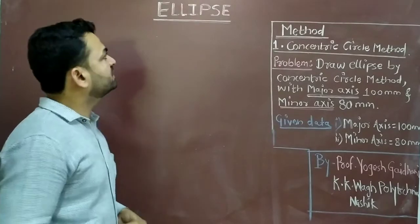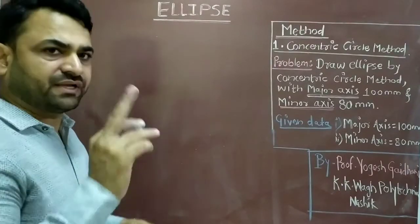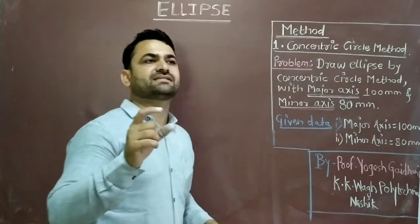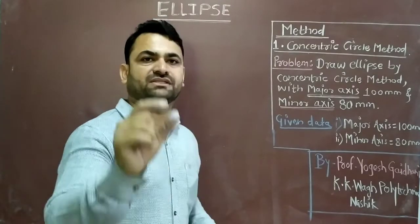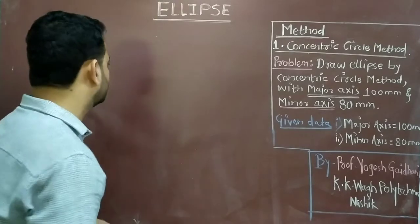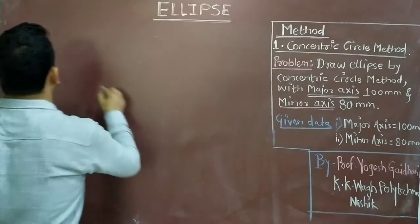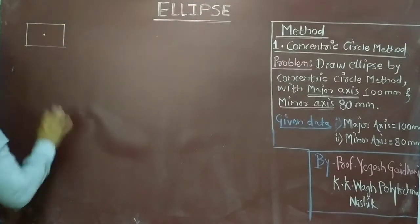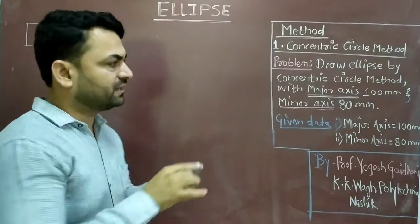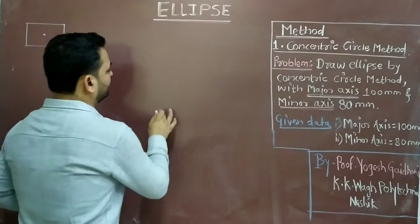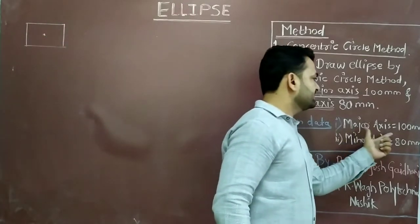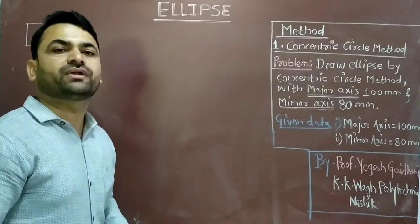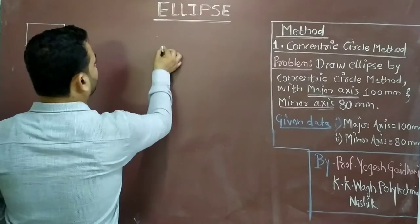Let's start with the solution of the problem. The first step: as we know, major axis is equal to 100 mm, so take a distance equal to half of the major axis, which is equal to 50 mm, as a radius. Take 50 mm distance in compass. I would suggest you consider the center point so that the total problem will be covered in a single page in a perfect manner. Taking center, as the major axis distance is equal to 100 mm, half of 100 will be equal to 50. Take 50 mm distance in compass and draw one circle.